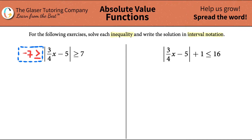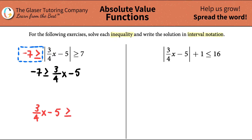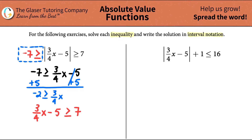Now I can separate into two equations. Once we do that, you don't have to write the absolute value anymore. So: negative 7 is greater than or equal to 3/4x minus 5. And for the other one: 3/4x minus 5 is greater than or equal to 7. Now we have two equations in which we just have to solve for x. The first thing I'm going to do is add 5 on both sides, so negative 7 plus 5 is negative 2, which has to be greater than or equal to 3/4 times x.